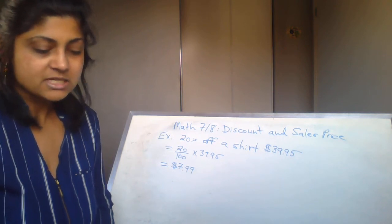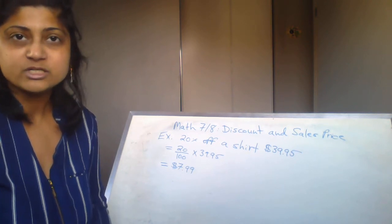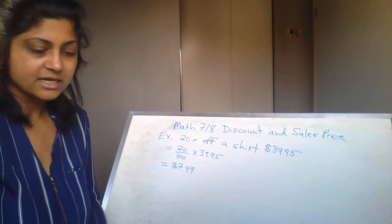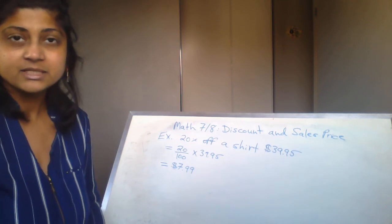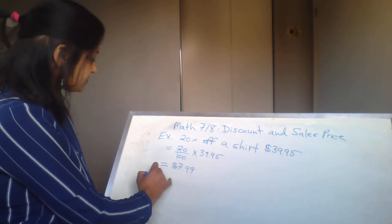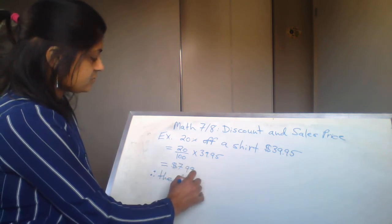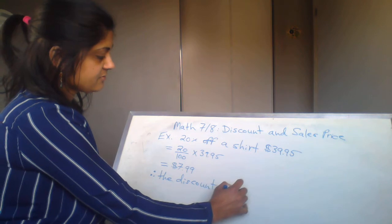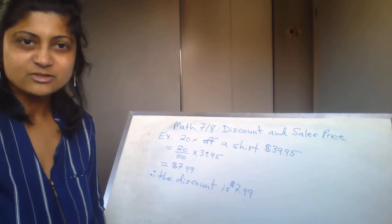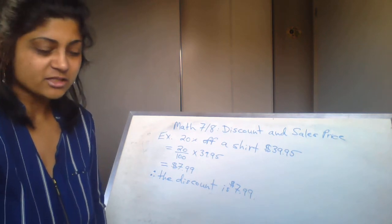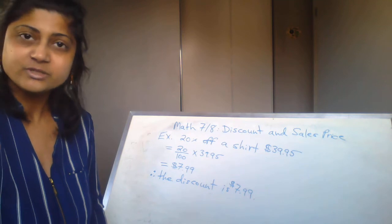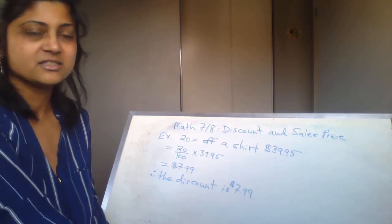This question asks us to calculate the discount only. There will be other questions where we calculate the actual sale price. The discount here is $7.99 — so that's just about eight dollars off. Therefore, the discount is $7.99. Don't forget the dollar sign. All I'm doing is taking the percent, converting it to a decimal by dividing by 100, then multiplying by the price of the product.